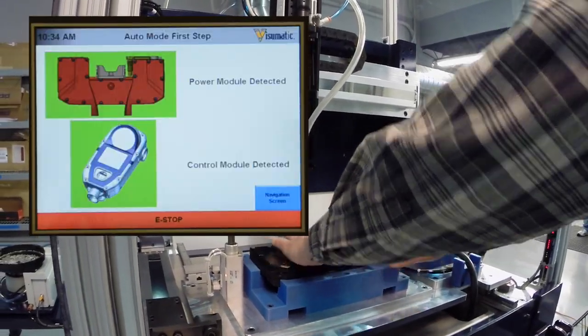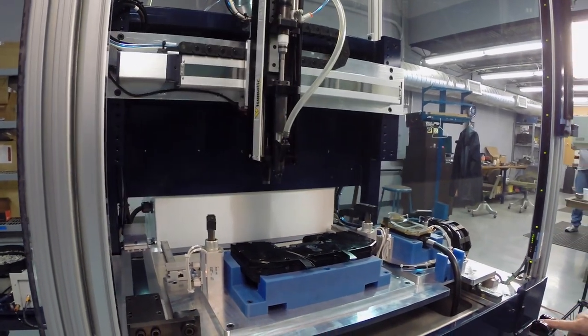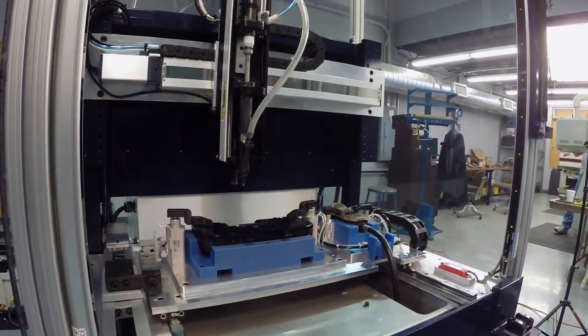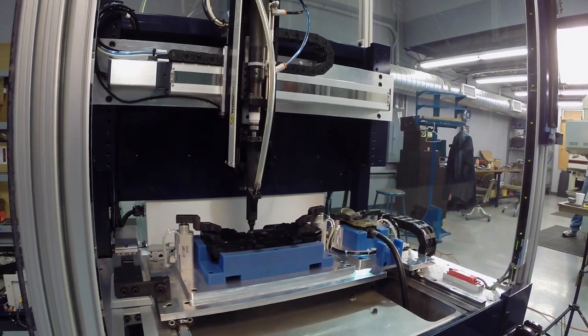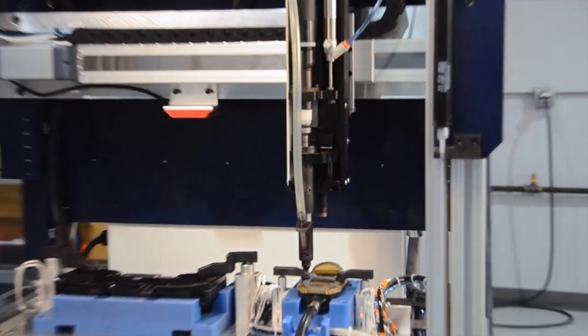This machine is able to handle assembly of two highly complex different parts in the same footprint using roughly one-third the floor space by utilizing separate X and Y robot axes working in tandem.